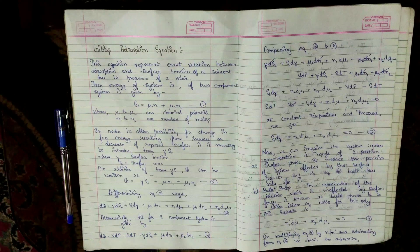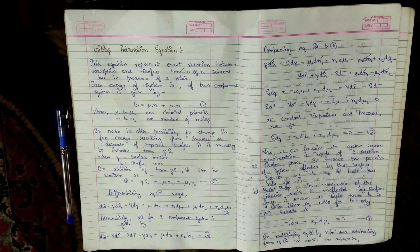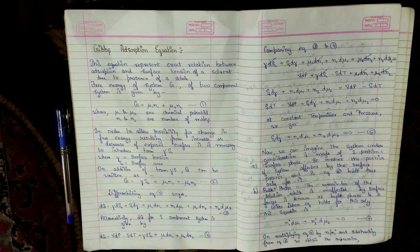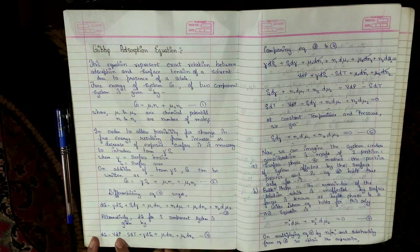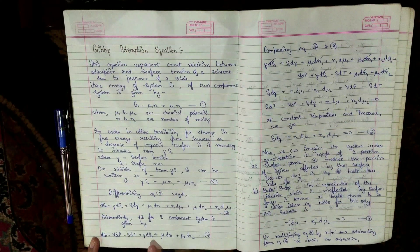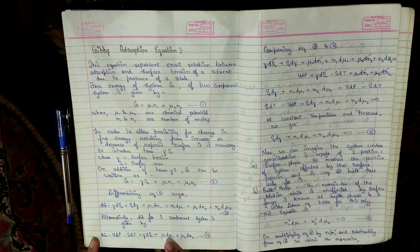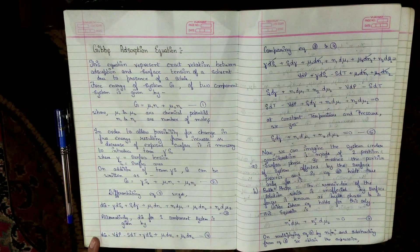Alternatively, dG for a two-component system is given by: dG = V·dP − S·dT + γ·dSₐ + μ₁·dn₁ + μ₂·dn₂ (equation 4), where V is volume, P is pressure, S is entropy, T is temperature, γ is surface tension, Sₐ is surface area, μ is chemical potential, and n is number of moles.